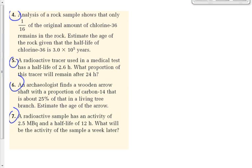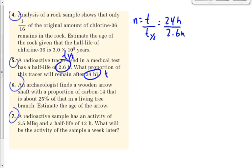Problem 5: A radioactive tracer used in a medical test has a half-life of 2.6 hours. What proportion of this tracer will remain after 24 hours? They inject this radioactive material into your body to trace blood flow. There are benefits and risks — the risk is small but not zero. We find little n: t over T₁/₂ = 24 hours divided by 2.6 hours = 9.2307 half-lives. That's a lot of half-lives after one day.